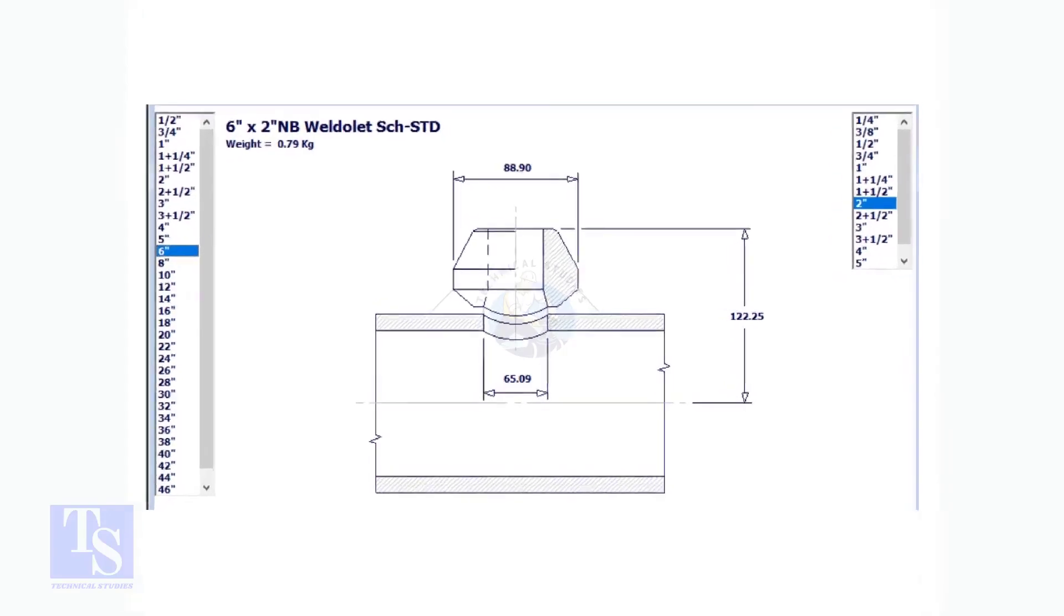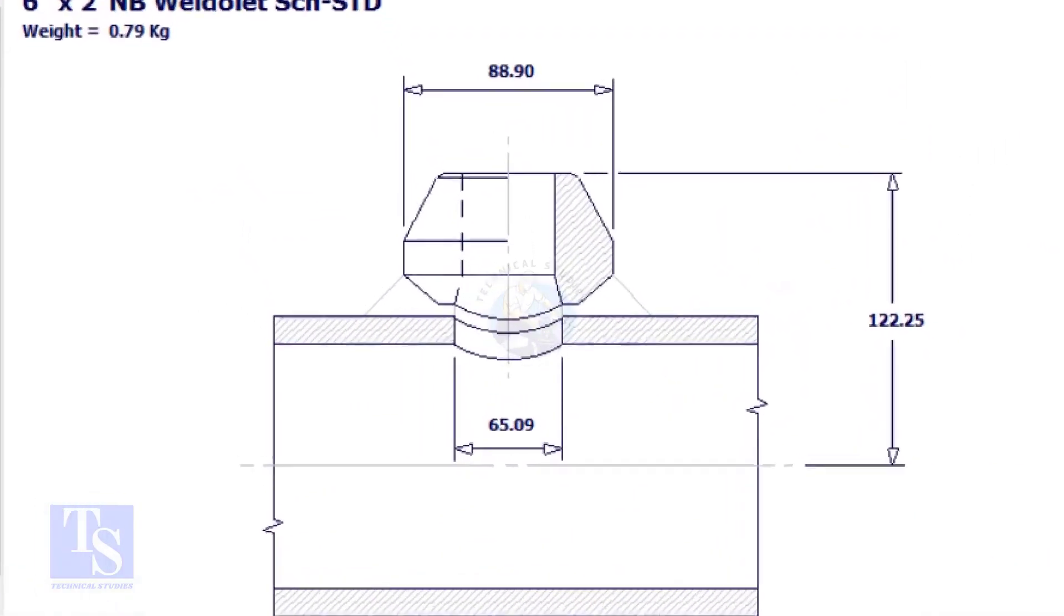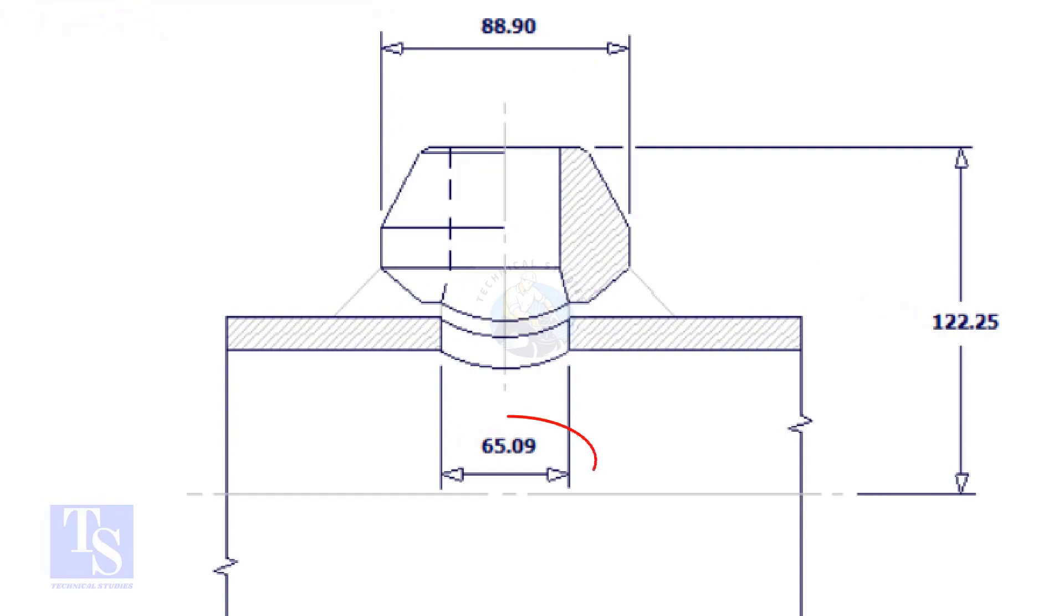The diameter of the opening shall be measured on the weldolet bottom size as shown in the sketch. Mark and cut or drill the hole on the pipe.